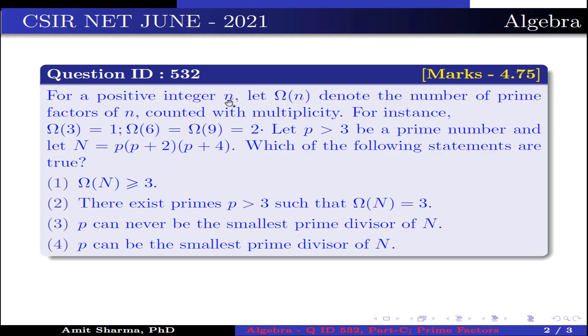Question is, for a positive integer n, let Ω(n) denote the number of prime factors of n counted with multiplicity. For instance, Ω(3) = 1, Ω(6) = Ω(9) = 2. Let p > 3 be a prime number, and capital N = p(p+2)(p+4).